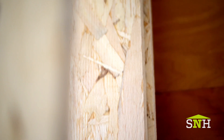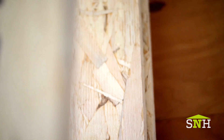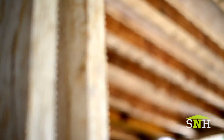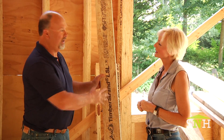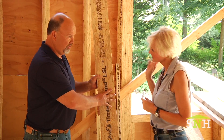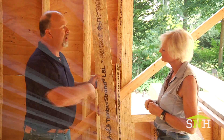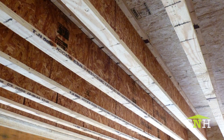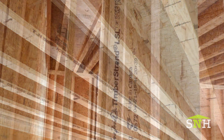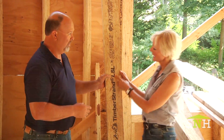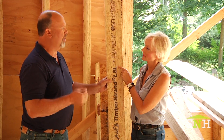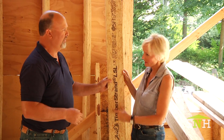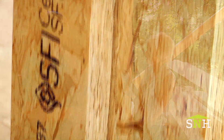We orient them the same direction in a press and coat them with adhesive. From there we make a large billet where we're able to cut a lot of different sizes, like the two by six that you see here, beam products, rim board — all those products come from timber strand. LSL stands for laminated strand lumber, so that's the strand we were discussing.